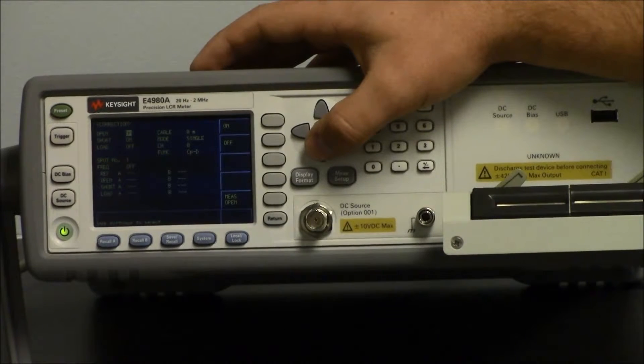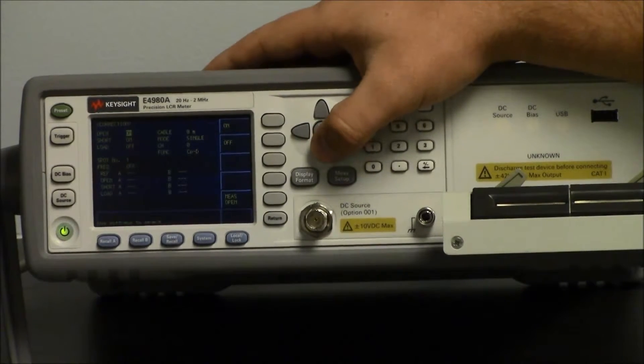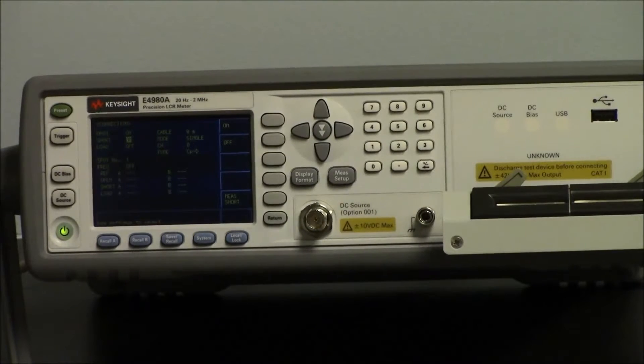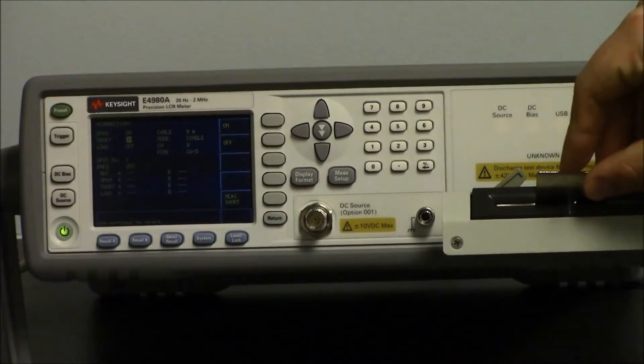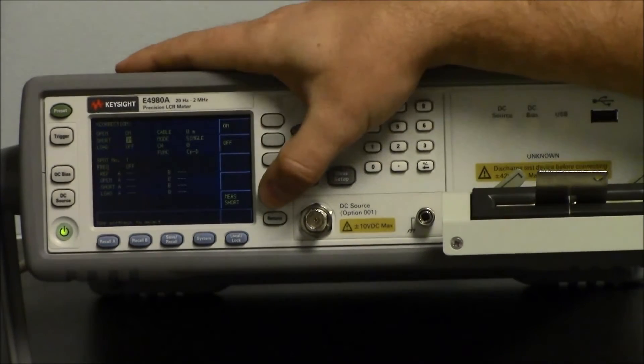Next, perform the short correction. So scroll down to short. Insert a shorting bar or jumper wire and measure your short.